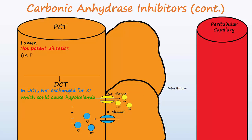In the lumen of the PCT, bicarbonate ion is not converted to carbon dioxide, so it stays in the lumen and more of it is lost in the urine. Since bicarbonate is a base, its loss in the urine will lead to acidosis of the blood.